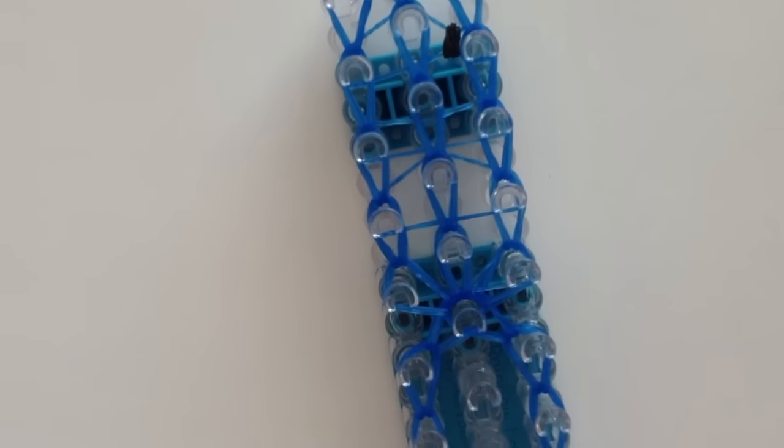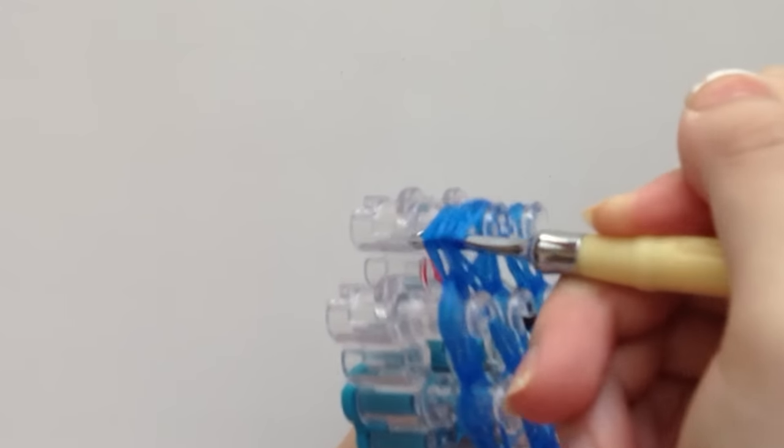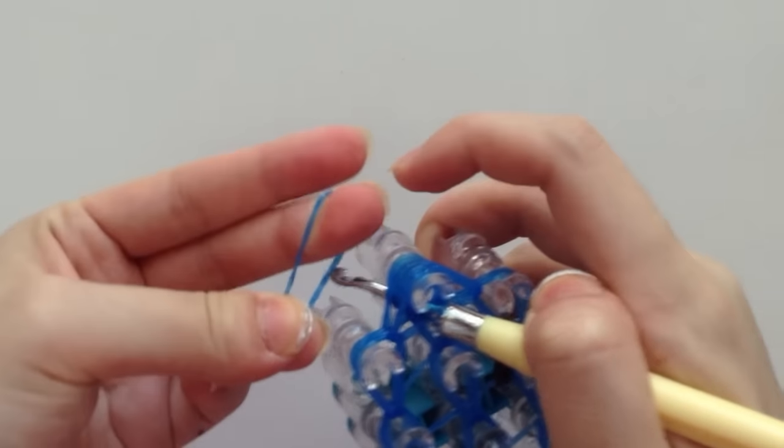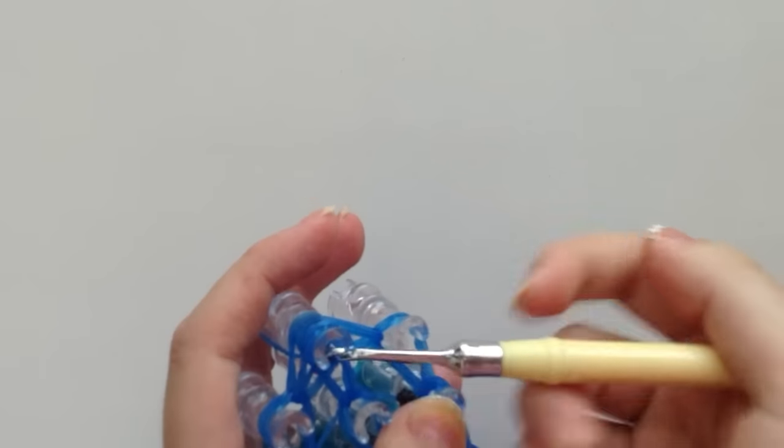Now once everything is hooked, you can place a slip knot through here. Go through all these rubber bands. And go like this. Pull it through. Make sure it's through everything.